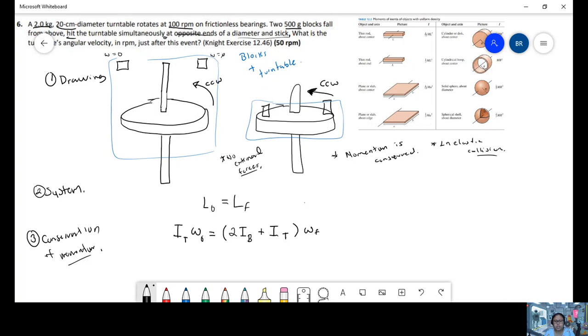So let's first find the inertia of the table. We identify that as a cylinder or a disk about its axis on the center. So the inertia is one half mass times the radius squared. The radius is 10 times 10 to the minus 2 meters. The mass of the turntable is 2 kilograms.